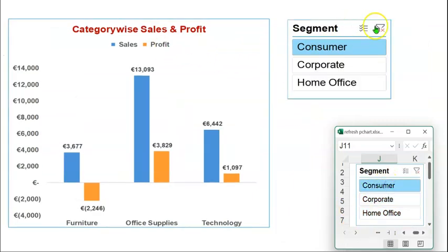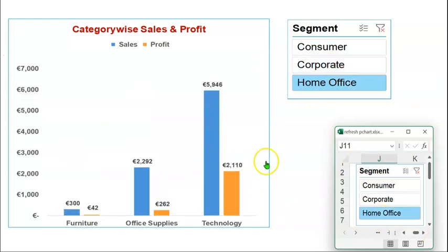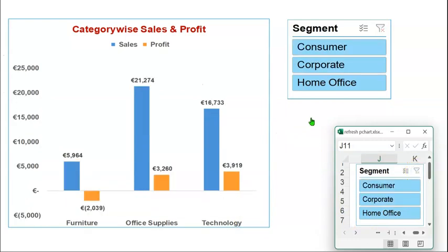Click on Consumer. Both the slicer as well as the pivot chart change. Select Corporate and you can see the changes. Select Home Office and you can see the changes. Let's clear the filter by clicking on this button. This is an easy way to demonstrate how the slicer selections interact with the pivot chart and slicer in the PowerPoint slide in slide show mode.